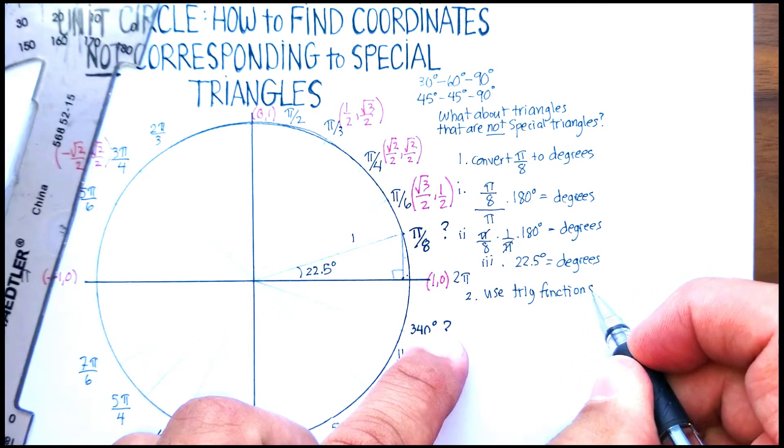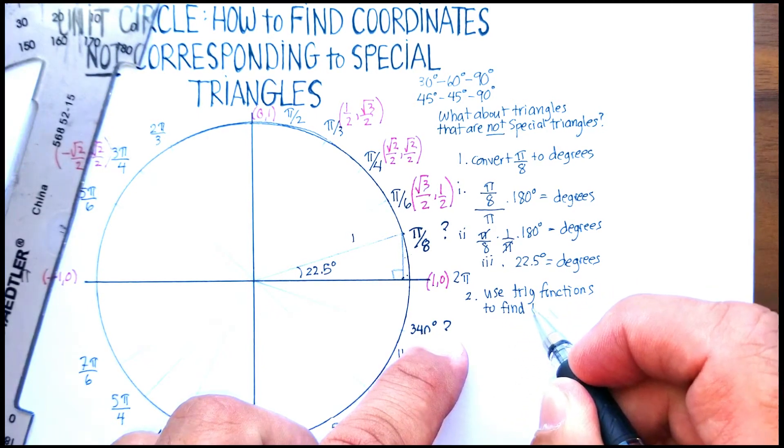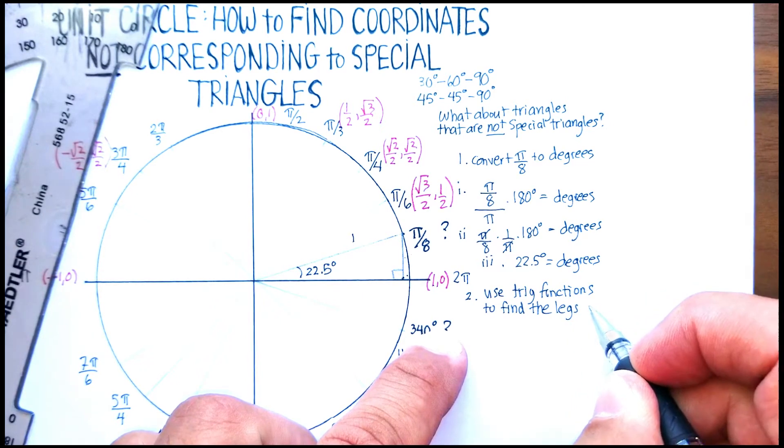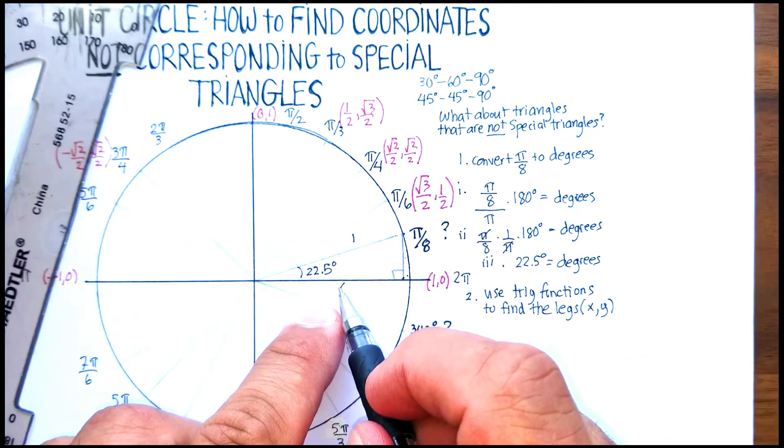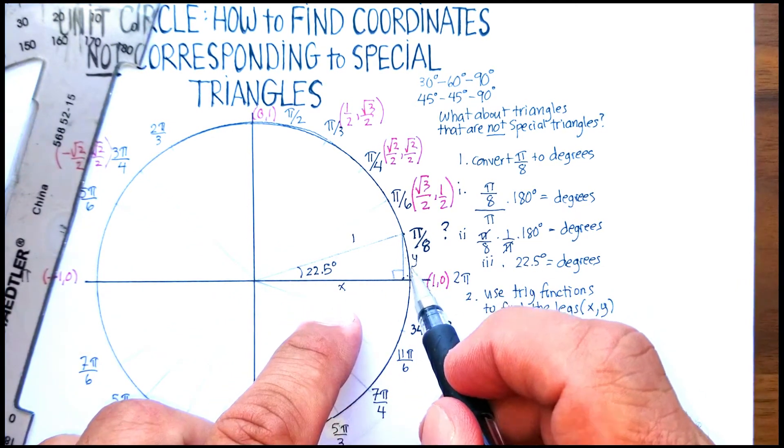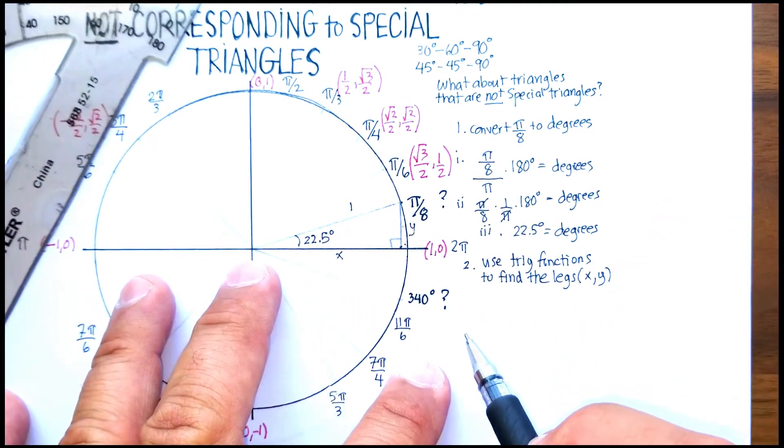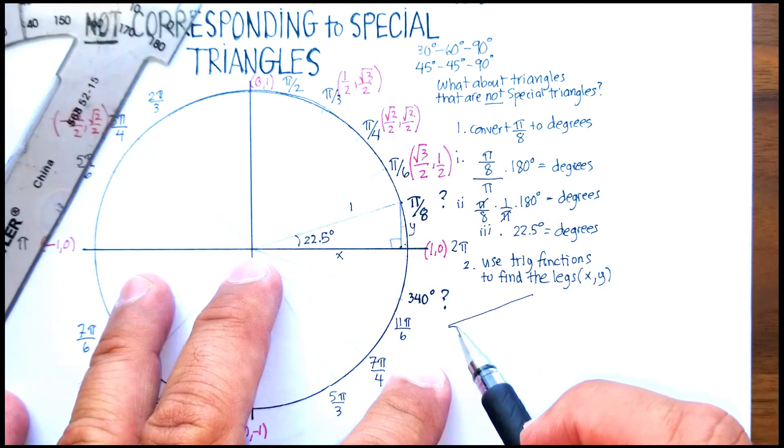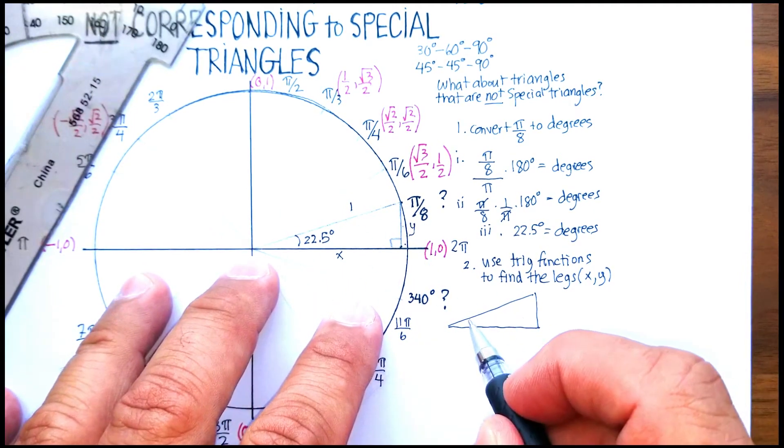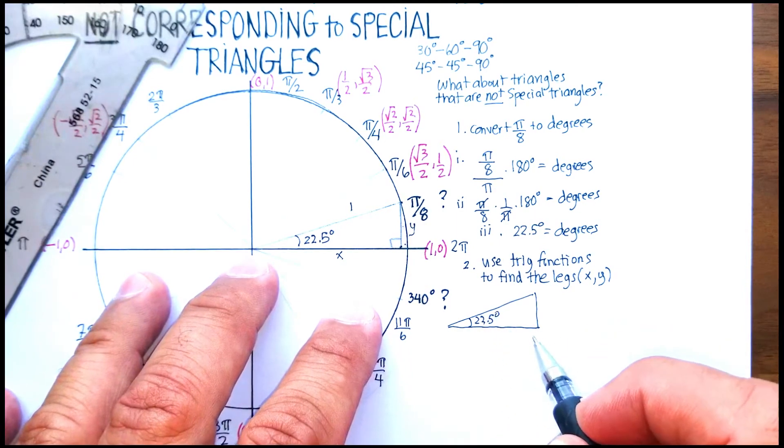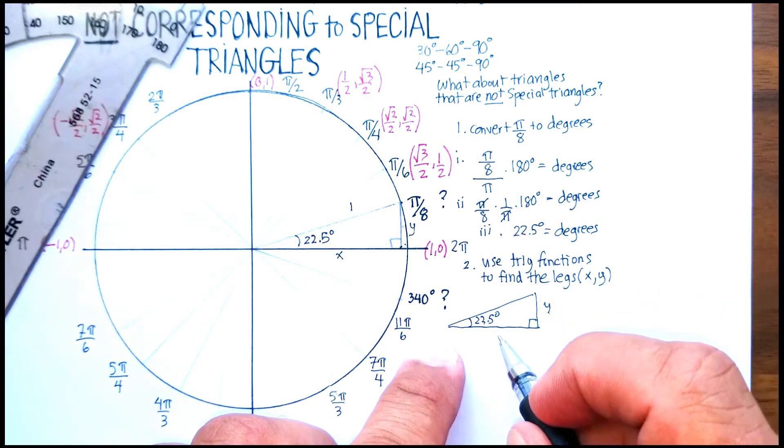...the legs, or the x and the y sides. Let's call this side the x, let's call this side the y. So I'm going to bring it down here, and let me just do this—I'm going to basically draw that triangle here. And we're going to call, again, this side the y because that would be our y value, and this side our x, and our hypotenuse was 1.